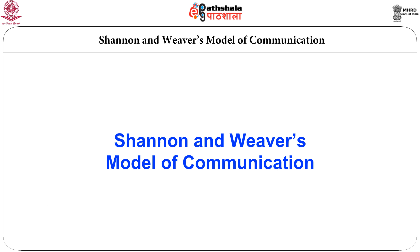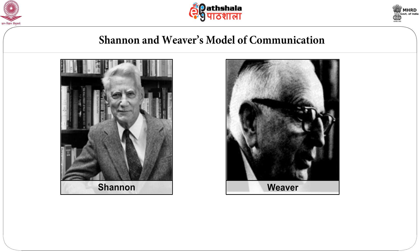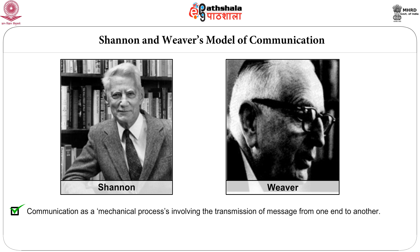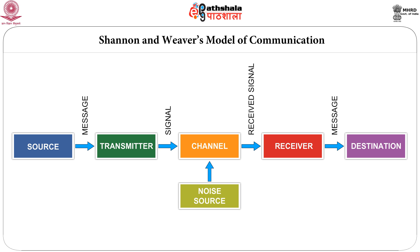Shannon and Weaver's model of communication was the first major model, given in 1949 by Claude Shannon, a social scientist, and Warren Weaver, a telephone engineer at Bell Laboratories of the USA. They conceptualized communication as a mechanical process involving the transmission of a message encoded in the form of a signal from one end — the source or sender — to another, which was the designated receiver. The model comprises five elements: source, transmitter, signal, receiver, and destination.